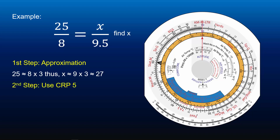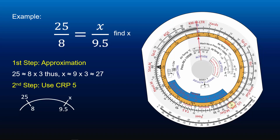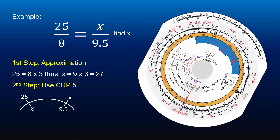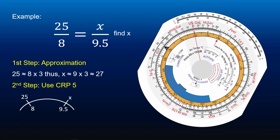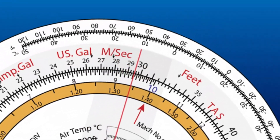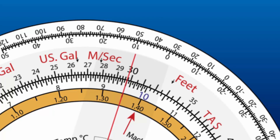The second step is to use CRP5 to find the answer. The arrangement of the given variables is as shown on the screen. Locate 25 on the outer scale and turn the CRP5 so that 25 is on top, then align the cursor with 25. Next, locate 8 on the inner scale and rotate the inner scale to align 8 with 25. Then locate 9.5 on the inner scale and align the cursor to 9.5.